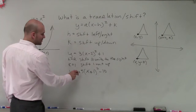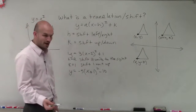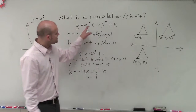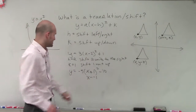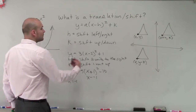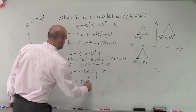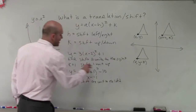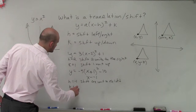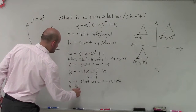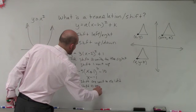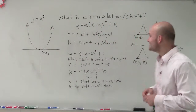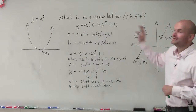Now let's look at y equals negative 5 times x plus 1 squared minus 10. The negative 5 doesn't affect the shift. For x plus 1, I can rewrite this as x minus negative 1, so my h is negative 1, meaning I shift one unit to the left. And k equals negative 10, so I shift 10 units down. That's a quick introduction to translation or shift when using a quadratic in vertex form. Thanks.